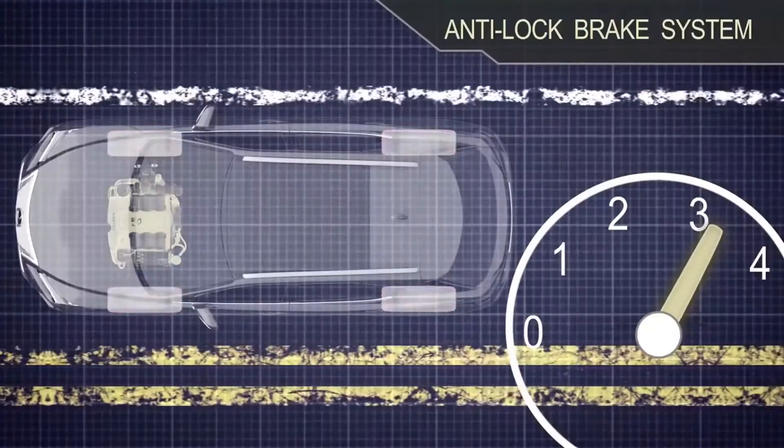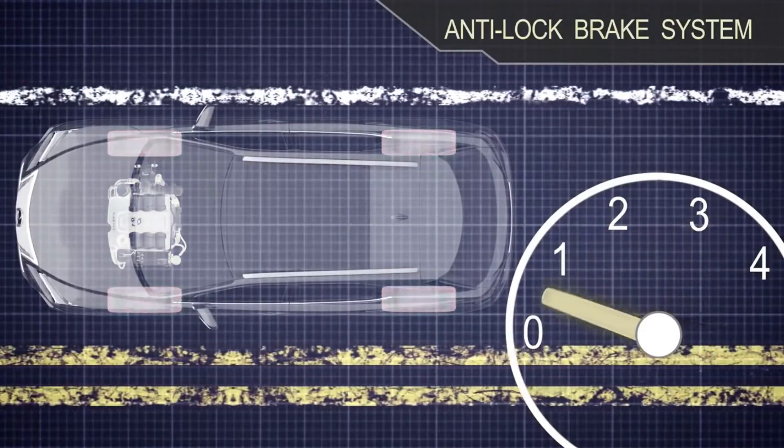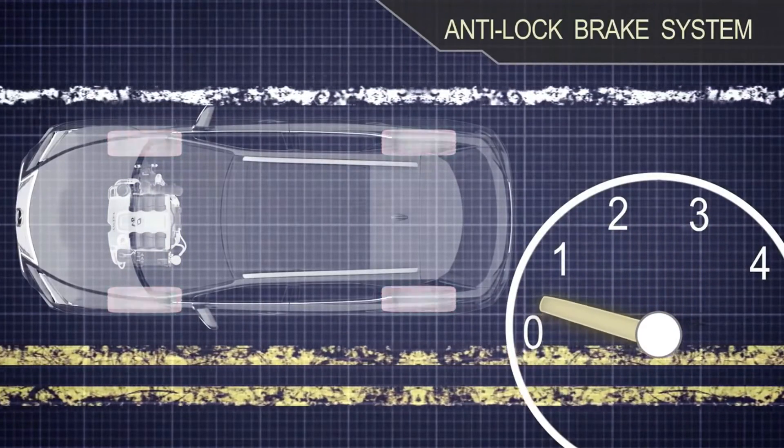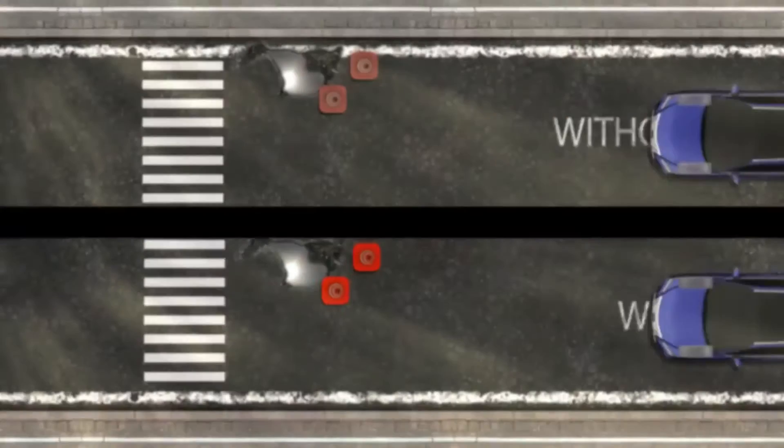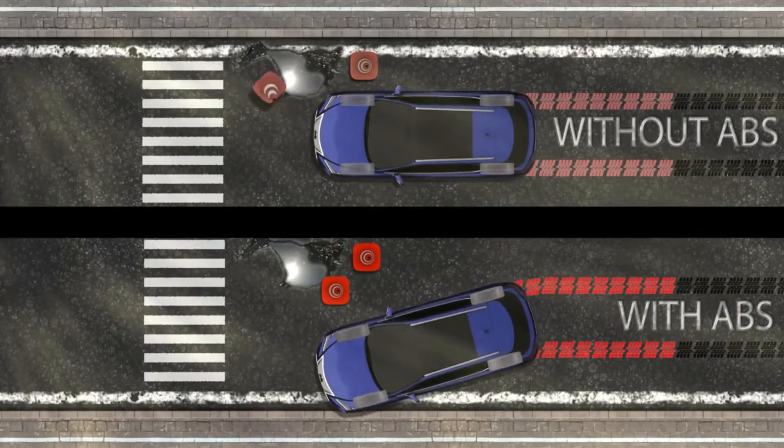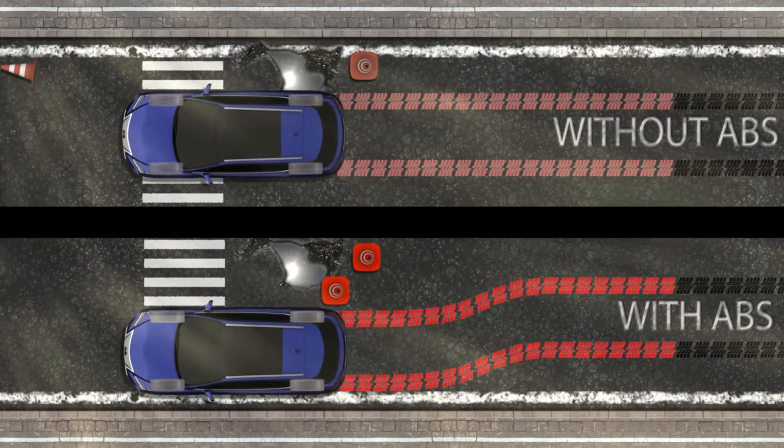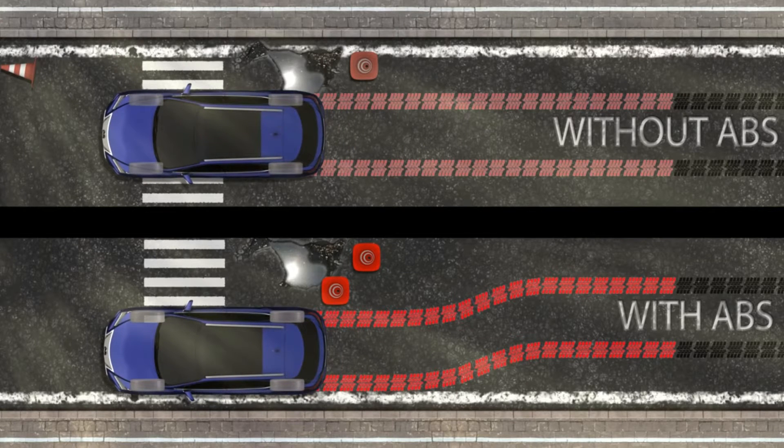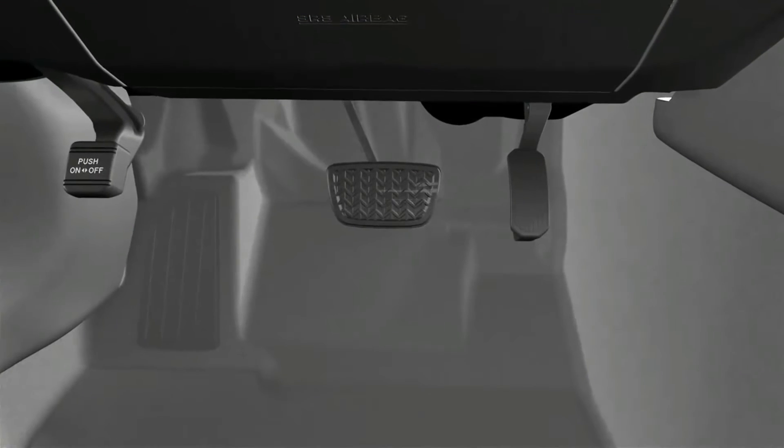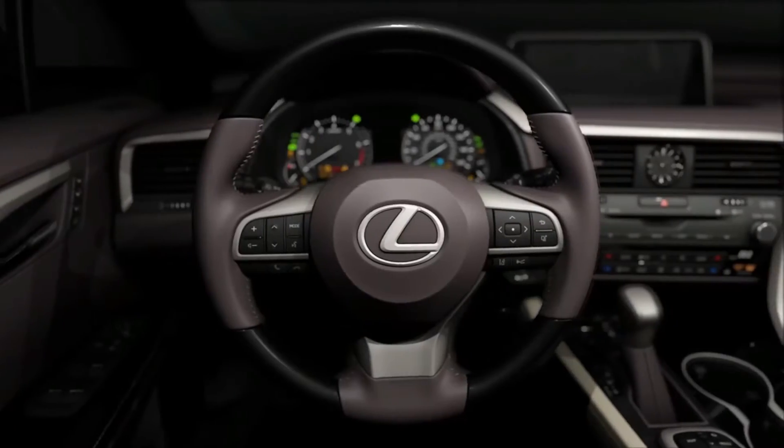By keeping all four wheels turning even as the vehicle decelerates, the tires maintain better grip on the road. A skidding tire has less braking and cornering capability than a rolling tire. In fact, a skidding front tire can generate very little cornering force, so ABS helps improve a driver's ability to stop and steer at the same time.